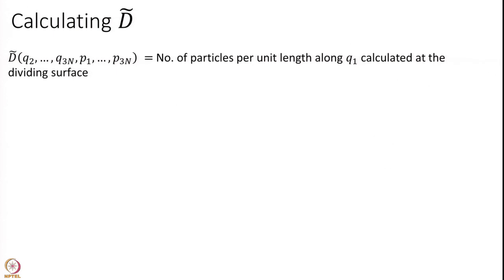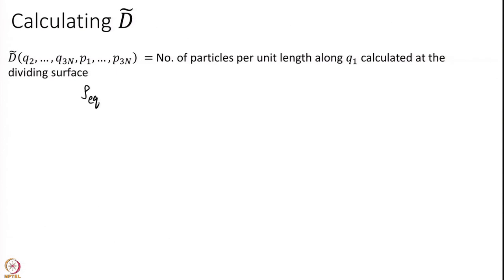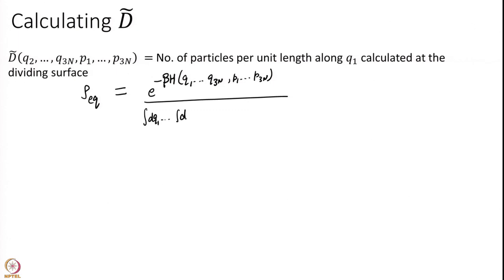Now let us think about calculating D-tilde, which is the number of particles per unit length along Q1. This is where we start making more assumptions. Here we assume thermal equilibrium. At thermal equilibrium, the equilibrium density is given at any point by a big integral over 6N dimensions. I have to find the number of particles per unit length along Q1 only, so I should have dQ1 to dQ3N times dP1 to dP3N — that is really the probability density.